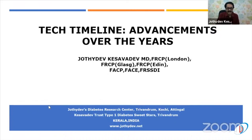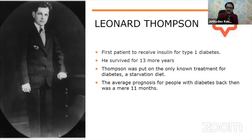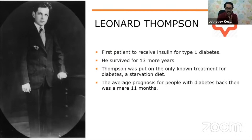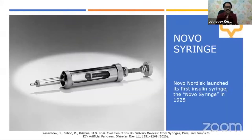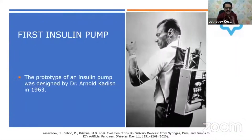We will start from the discovery of insulin. This is Leonard Thompson — the first patient to receive insulin for Type 1 diabetes. Before that, the diagnosis of Type 1 diabetes was a death sentence. The only treatment available was the so-called starvation treatment. He received insulin in 1922, and the Novo syringe was launched in 1925 — this is the beginning of the use of technologies in diabetes.